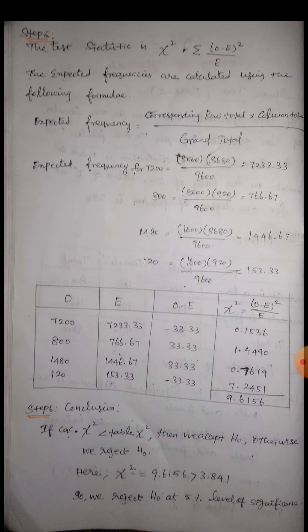We now form the table with observed frequency (given data) and expected frequency (calculated). The expected frequency values are approximately 7233, 766, and 1446. We then compute O minus E for each cell, and finally calculate chi-square as the summation of (O minus E) squared divided by E. The calculated chi-square value is 9.6156.